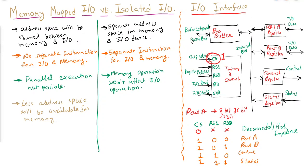So this is how an interface works — whenever the CPU wants to perform an input/output operation it uses this interface. We will stop here for this tutorial. In the next tutorial we will start our discussion on asynchronous data transfer, covering two methods: strobe and handshaking. Thank you.